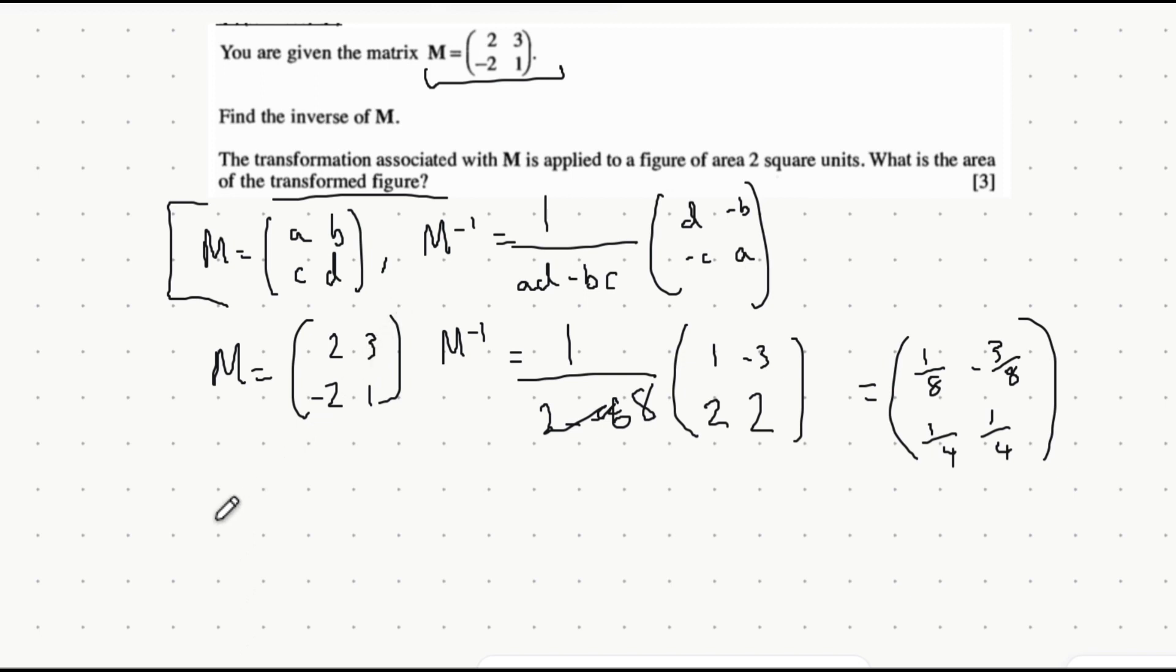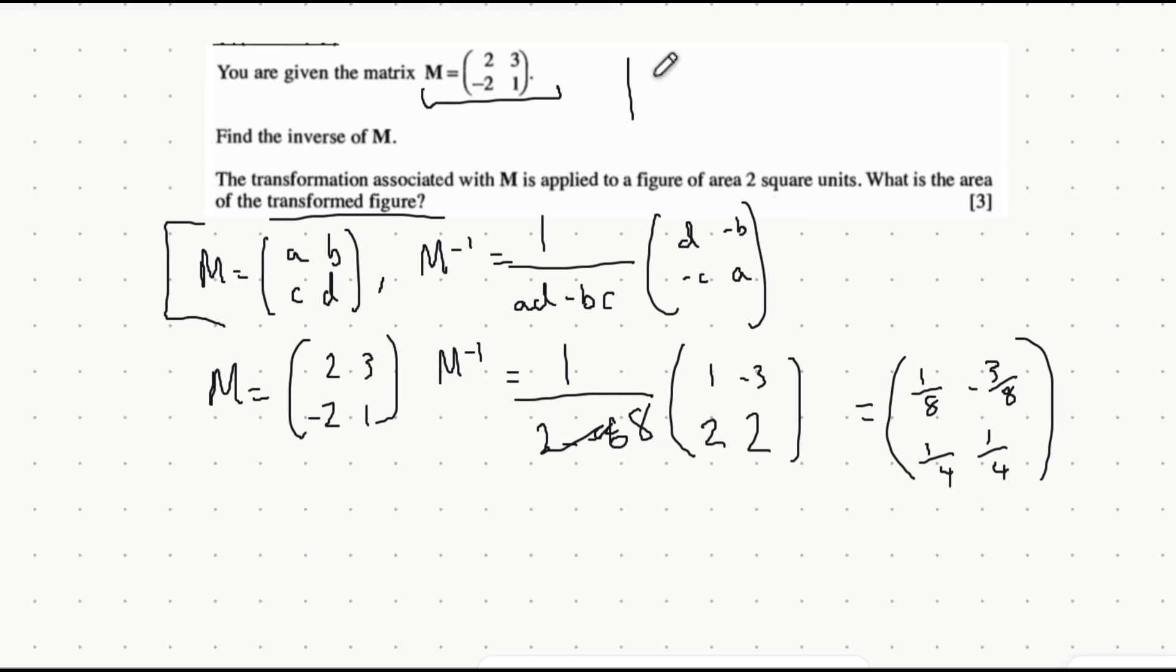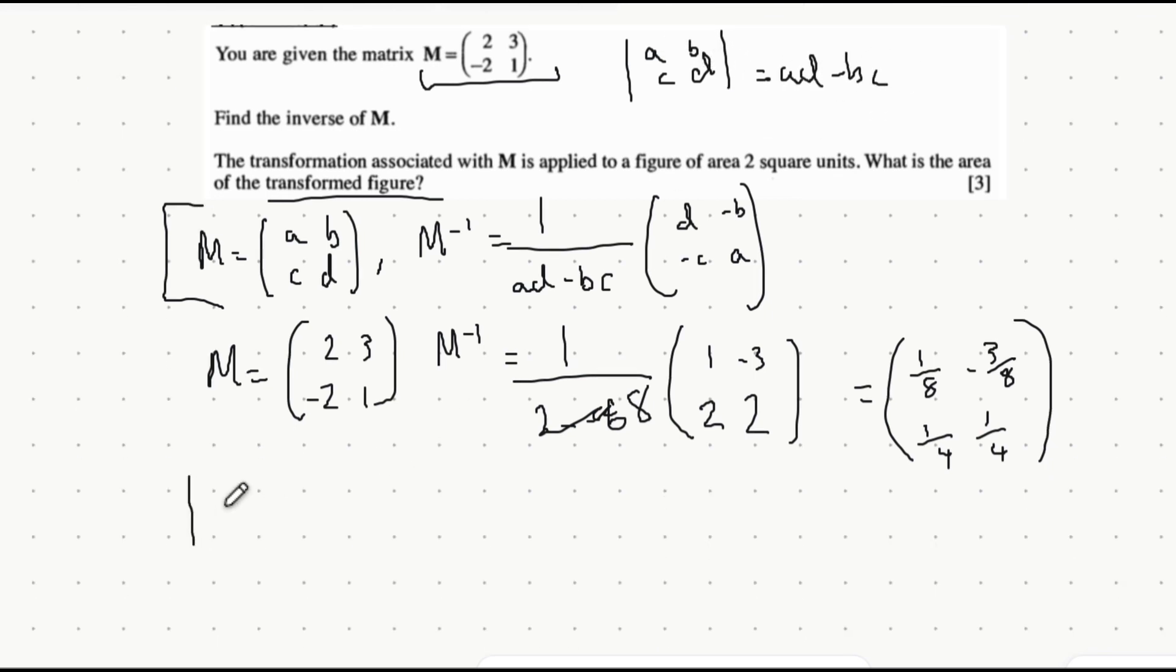Well to do this we're first going to find the determinant of a matrix. Now a matrix in the form ABCD to find its determinant which are represented by these two lines that kind of look like a modulus is A times D minus B times C. So in this case the modulus of our matrix 2, 3, minus 2, 1 is given by well 2 times 1 is 2 take away 3 times minus 2 is minus 6 which is 2 plus 6 which is 8.